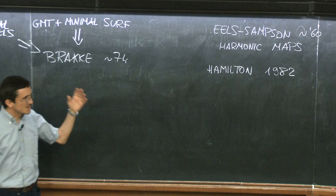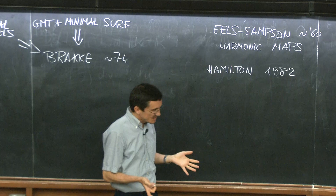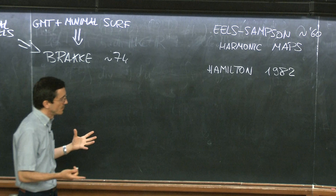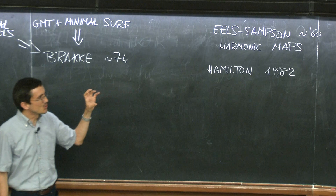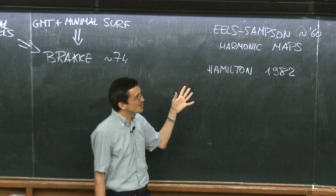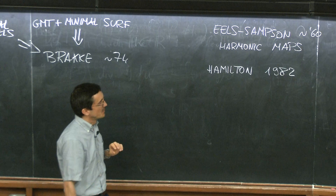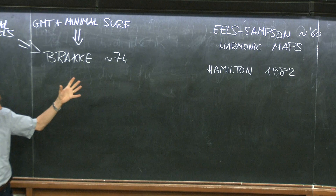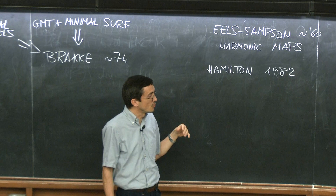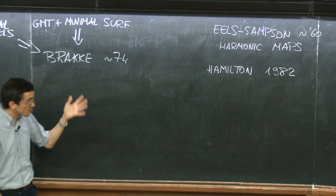Hamilton introduced the so-called Ricci flow. This school is on extrinsic flows, where extrinsic curvatures are involved. The Ricci flow instead is an intrinsic flow — the evolution of the metric of an abstract manifold. We will not focus on Ricci flow in this school, but it is worth mentioning because there are similarities between Ricci flow and mean curvature flow, and Ricci flow has provided motivation and inspiration for a lot of work in mean curvature flow. What I will talk about is largely influenced by work on Ricci flow.